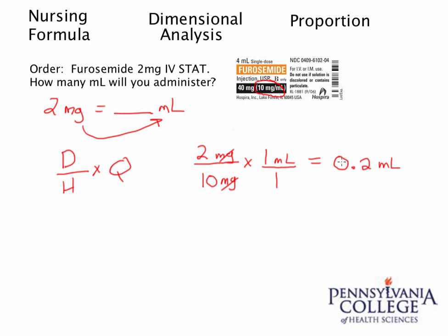We need that leading zero to represent that this is a number smaller than 1. Since this is a milliliter dose less than 1, we would round to the hundredths, but this is a terminating decimal at the tenths place, so we don't need that. This should make sense: for every 10 milligrams available we administer 1 milliliter, so 2 milligrams should clearly be less than 1 milliliter. If we gave the patient 1 milliliter, they would be receiving 10 milligrams — way too much. Recognizing this upfront can help prevent potential errors.